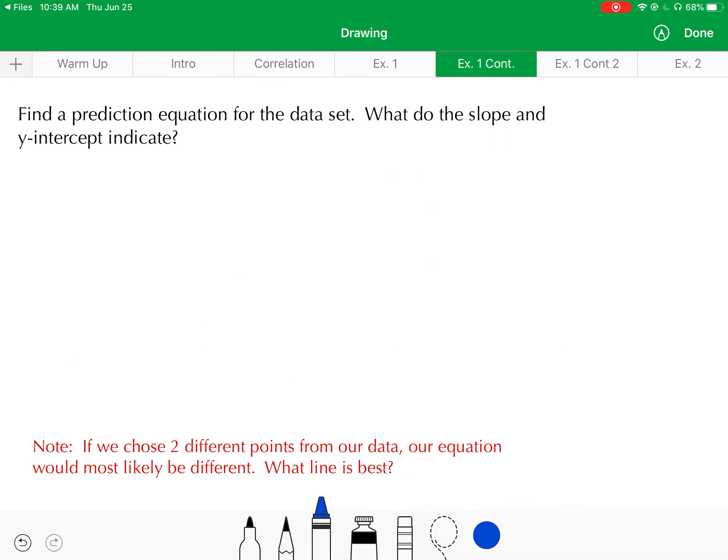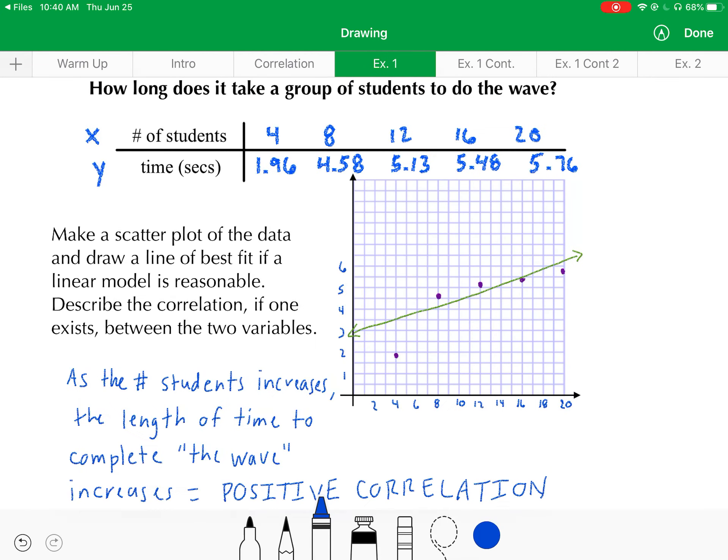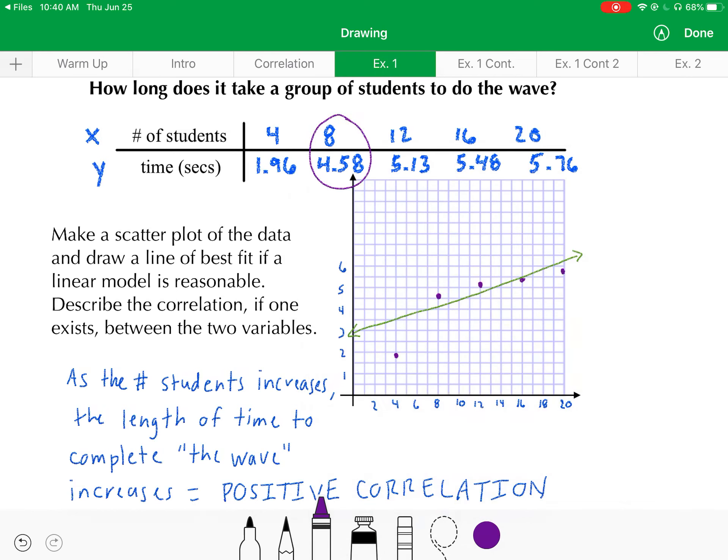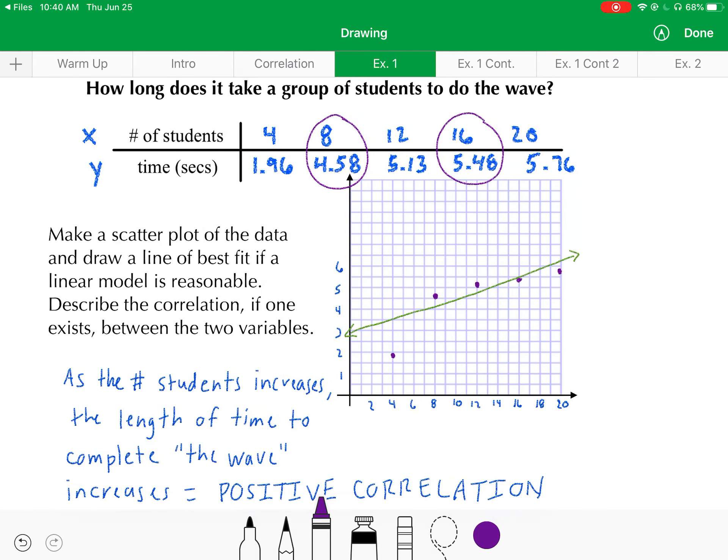Now what we want to do is come up with a prediction equation for this data set, meaning find a linear equation to represent it. And once we have it, we'll want to make sense of it. What do the slope and the y-intercept of the equation indicate? So what we'll do is pick two points from the data set. Let's go back here and look at our data set. The one point that I would avoid using is that first point of 4, 1.96, because it's kind of like an outlier here. So I am going to pick this point of 8, 4.58, and then I'll also do 16, 5.48.